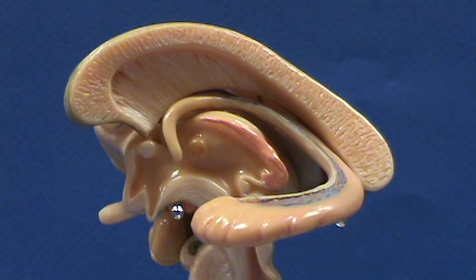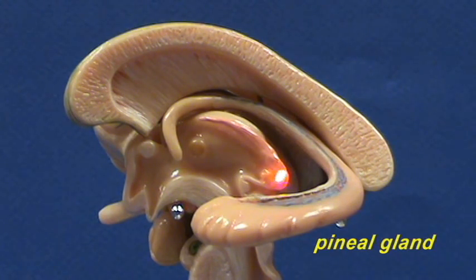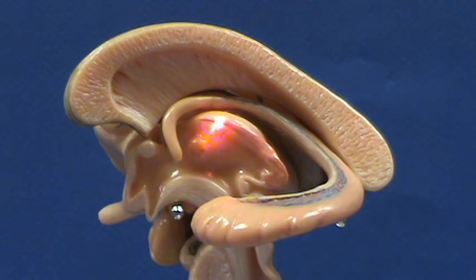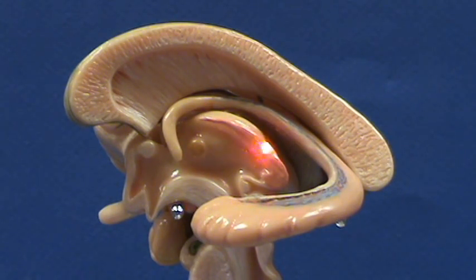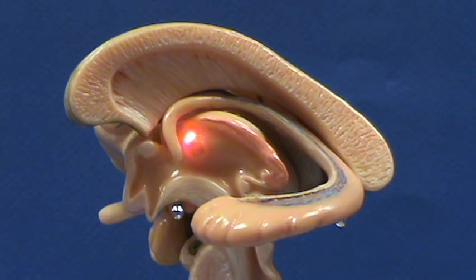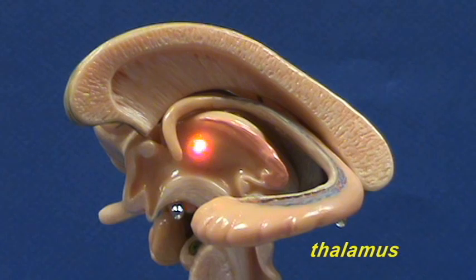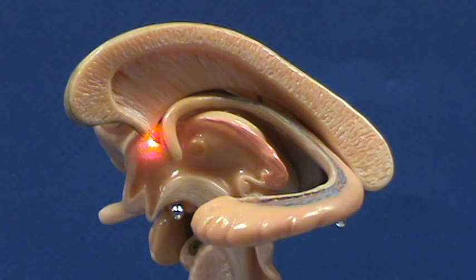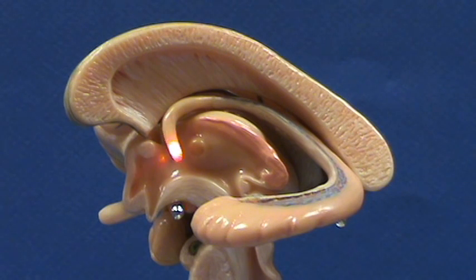Let's review some of the structures that are visible. This is the pineal gland right over here. Right over here would be the roof of the third ventricle where you find the choroid plexus. Here you can see the thalamus, and right over there is the interthalamic adhesion. Right in front of where you have the fornix — these are the fibers of the fornix.